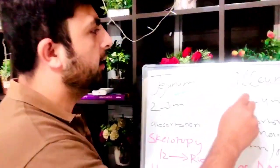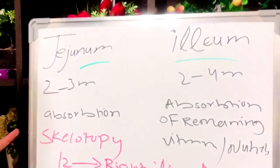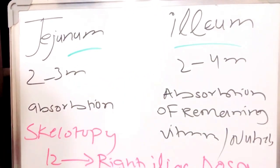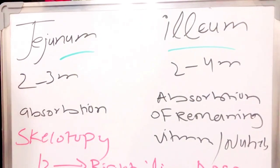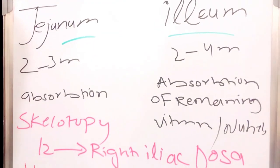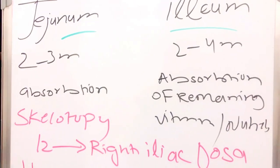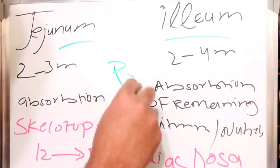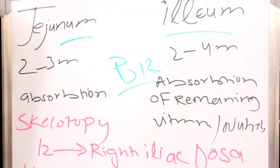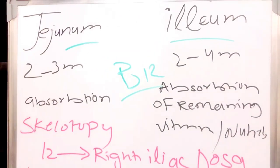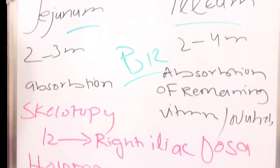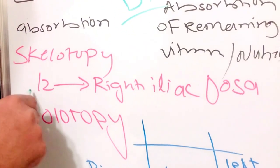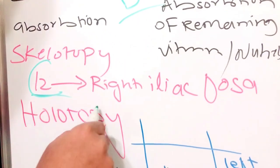The next parts are the jejunum and the ileum. The jejunum is about two to three meters long and the ileum is two to four meters long. In the jejunum, absorption is the primary function, while in the ileum, absorption of remaining vitamins and nutrients — especially vitamin B12 — occurs. The skelotopy of both parts extends from lumbar L2 to the right iliac fossa.